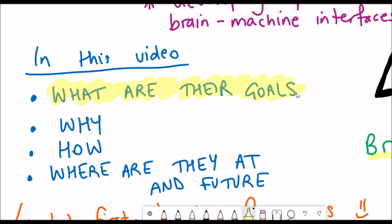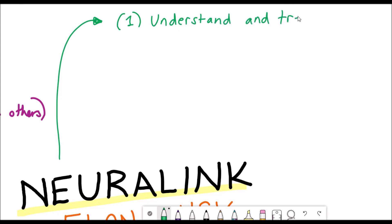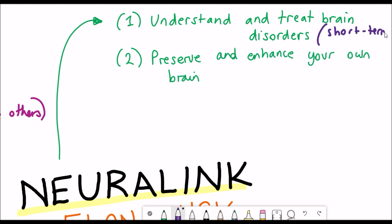However perturbations in neuronal signaling can cause a variety of different disorders such as epilepsy, depression and Parkinson's disease and one of the motivations behind Neuralink is to be able to understand and treat these different brain disorders.